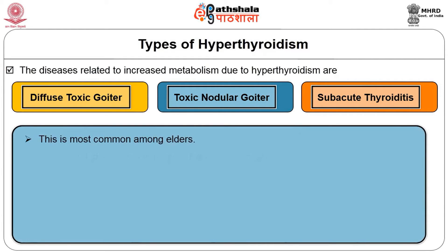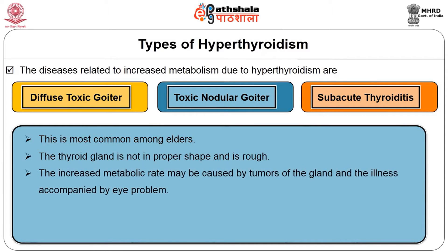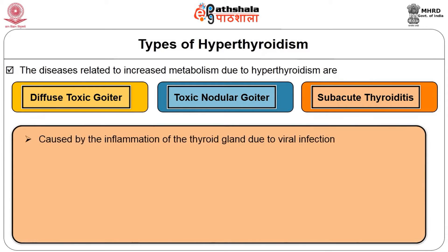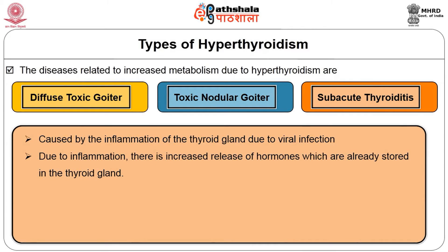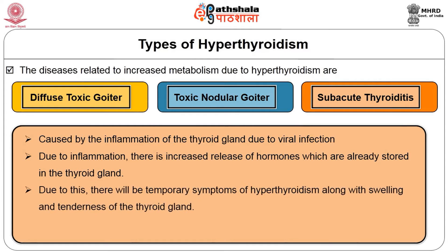Toxic nodular goiter is a type of hyperthyroidism common among elders. The thyroid gland is not in proper shape and will be rough. This increased metabolic rate may be caused by tumors of the gland, and is accompanied by eye problems. Subacute thyroiditis is caused by inflammation of the thyroid gland due to viral infection. Due to inflammation, there is increased release of hormones already stored in the thyroid gland, leading to temporary symptoms of hyperthyroidism along with swelling and tenderness of the gland.